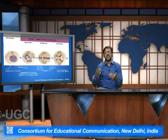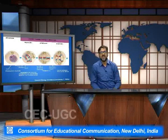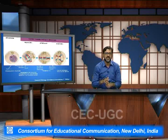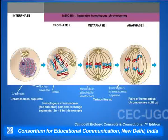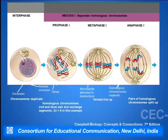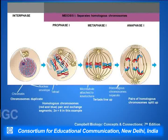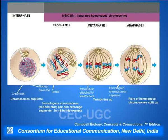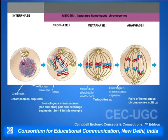Meiosis is generally divided into 2 phases — one is called meiosis 1 and the other is called meiosis 2. Meiosis 1 basically has the interphase, prophase 1, metaphase 1, anaphase 1, and telophase 1.